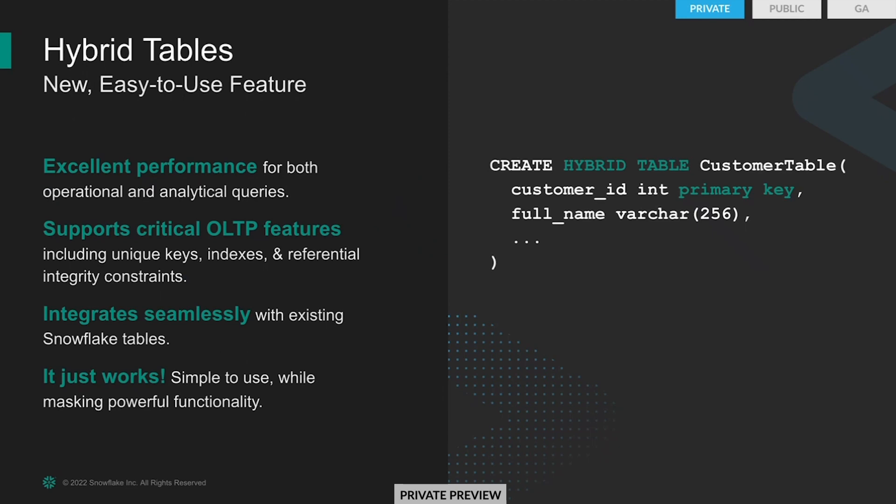The feature I'm going to talk about today that's part of the Unistore workload is hybrid tables. Currently, this is in private preview. The hybrid tables functionality allows you to get excellent performance for both query types — you can issue single row record retrievals and single row level updates, as well as large aggregations for your analytical needs. It supports all of the OLTP features you're used to using in other engines, like unique keys, indexes, and it enforces referential integrity on all of the constraints that you define. These all integrate seamlessly with existing Snowflake tables and interoperate well with the existing analytical tables. All of this just works together in one seamless system.